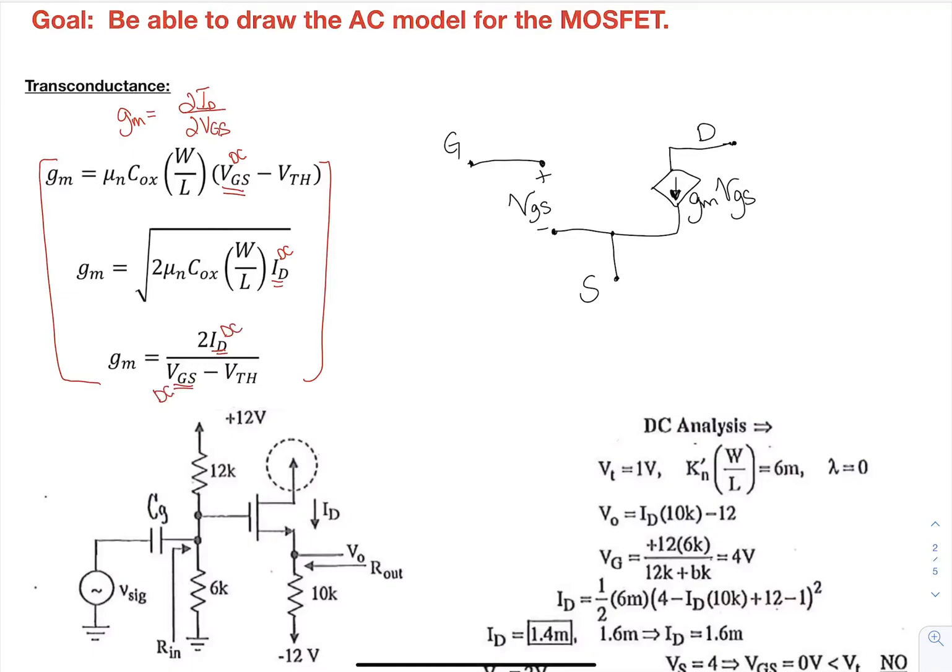The hybrid pi looks very similar to how the hybrid pi looked for the BJT, except we notice that there's no longer a resistance between here. So between our gate and our source, the source is like the emitter, the gate is like the base. We don't have a resistance.